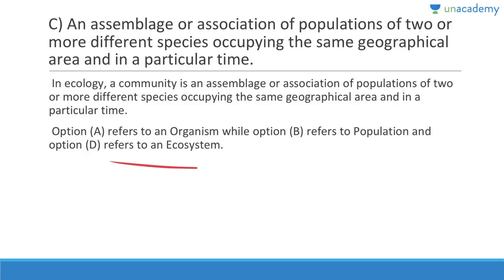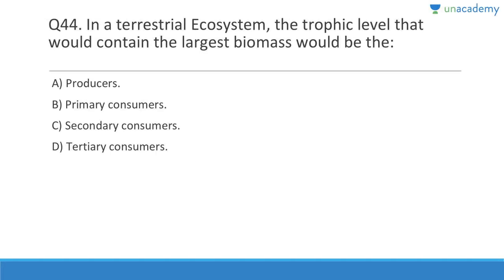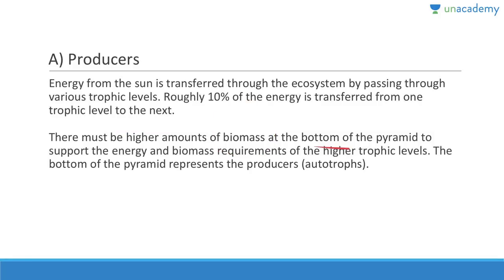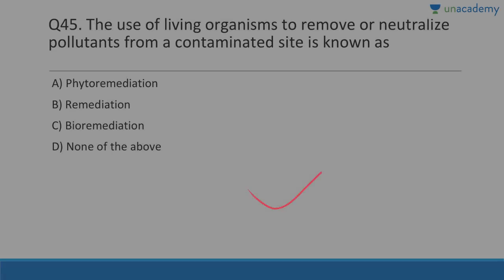Question forty-four: In a terrestrial ecosystem, the trophic level that would contain the largest biomass would be the producers. Energy from the sun is transferred through the ecosystem through various trophic levels, and roughly ten percent of the energy is transferred from one trophic level to the next. There must be a higher amount of biomass at the bottom of the pyramid to support the energy and biomass requirements at higher trophic levels. The bottom of the pyramid represents producers or autotrophs.